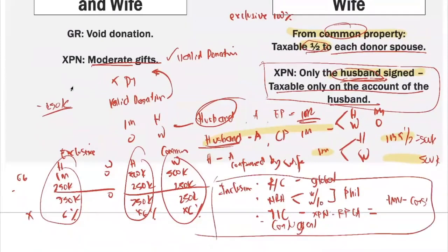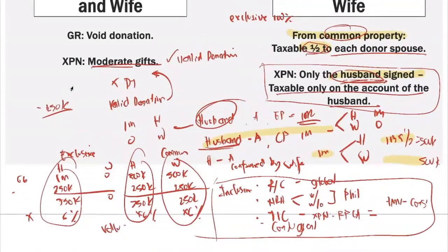So just remember the rules on inclusions. If the donor is a resident or citizen, taxed globally. If NRA, you look whether it is with reciprocity or without reciprocity as to Philippine properties subject to donation. For transfer for insufficient consideration, except real property considered as capital asset, it is fair market value less consideration. For conjugal donations, know what particular spouse made the donation to determine what should be included in gross gifts.